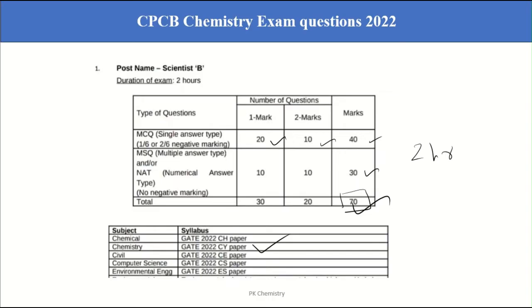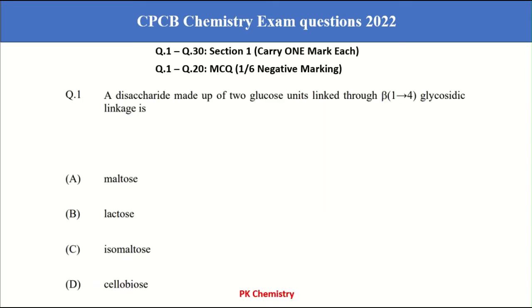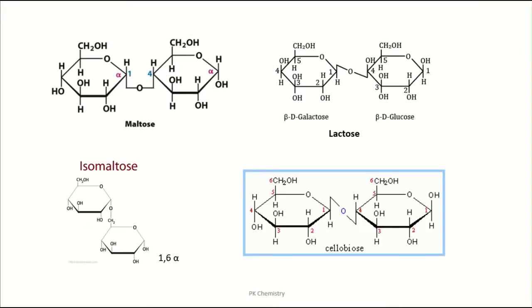Let's start discussing the question paper. The first question asked from the carbohydrates. Disaccharides made up of 2 glucose units linked through beta-1,4 glycosidic linkage. Here if you look at this maltose, lactose, isomaltose, cellobiose. First we should know the structure of this.